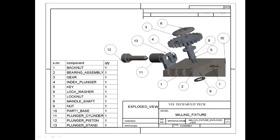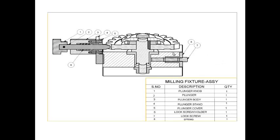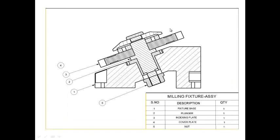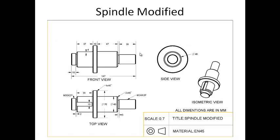This is the 3D design of the modified milling fixture, and these two are 2D images. First, we have to reduce the height of the spindle and the cover nut. We modify the cover and nut together — we increase the height of the cover plate and reduce the height of the nut, and create an internal thread in the spindle.